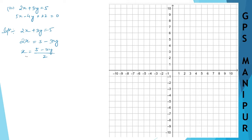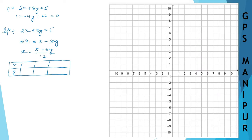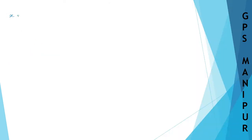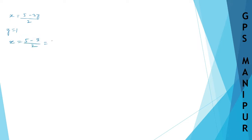Now draw the table for this one. x is equal to 5 minus 3y divided by 2. When y is equal to 0, we get 5 minus 0 divided by 2 — we cannot take this number. So let's try y is equal to 1: x is equal to 5 minus 3 into 1, which is 2, divided by 2, which is 1.